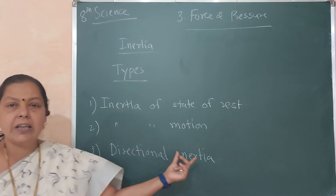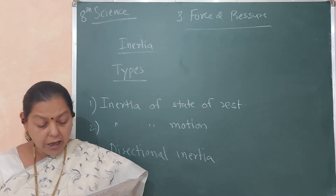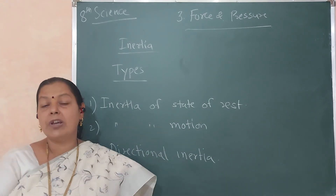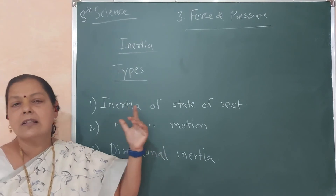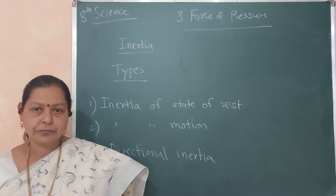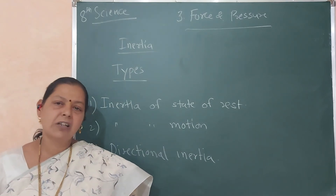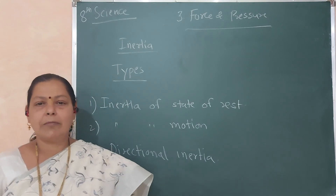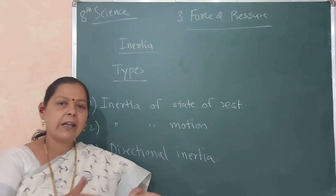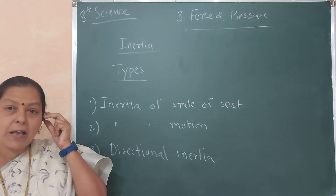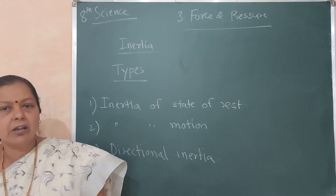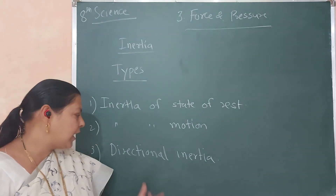The third type is directional inertia. The inherent property of an object due to which the object cannot change its direction is called directional inertia. When a bus takes a turn, the passengers tend to turn in the opposite direction. This is called directional inertia.